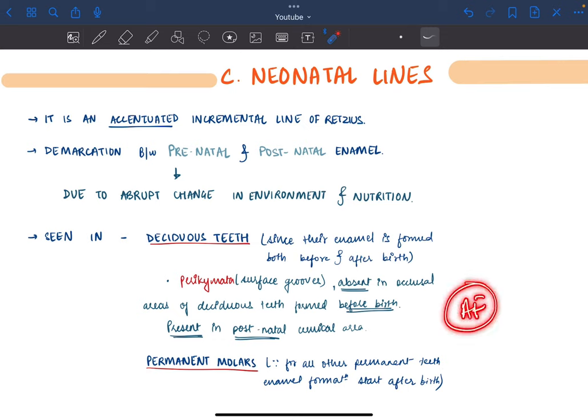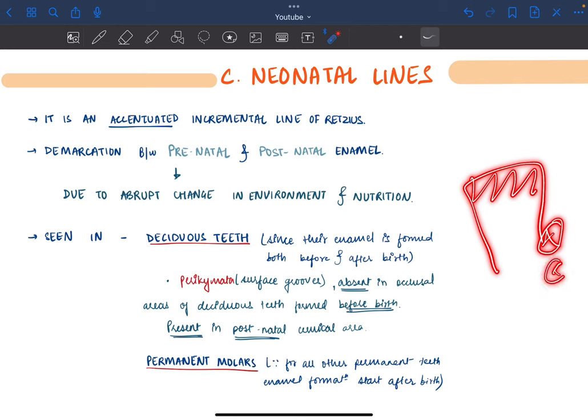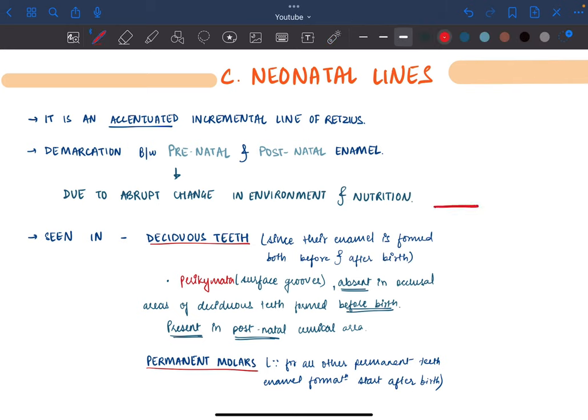Perikymata are surface grooves present on the surface of the tooth. For deciduous teeth, perikymata are seen only on the occlusal surface and not on the cervical surface. This is the oral cavity from where the tooth is going to erupt, and this is the cuspal region which originates first. Hence it is evident that the cuspal region has to be developed first, so enamel deposition here will be first.